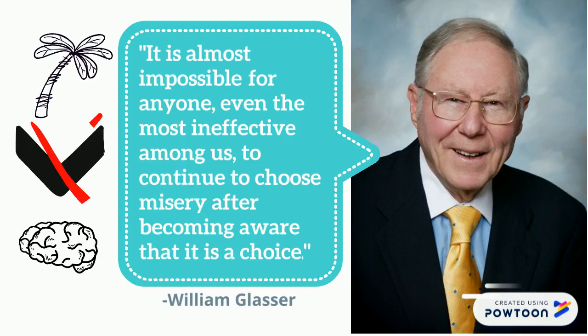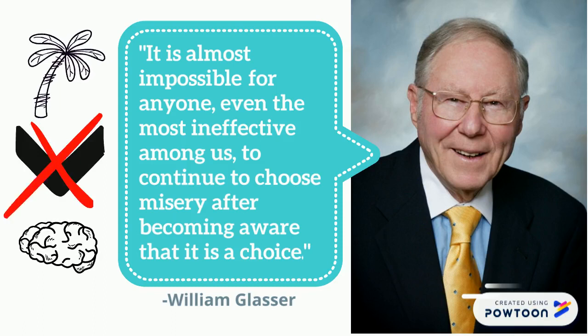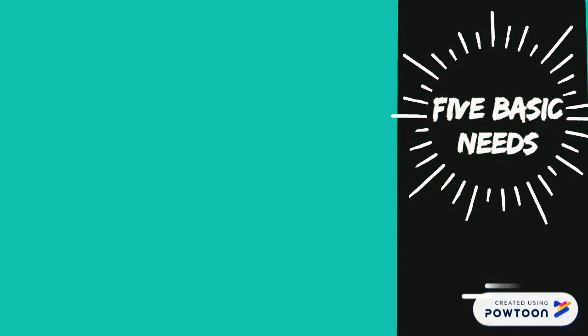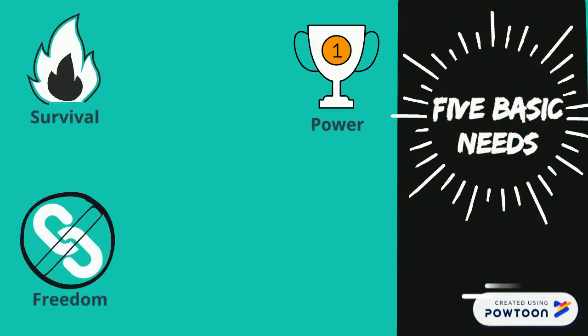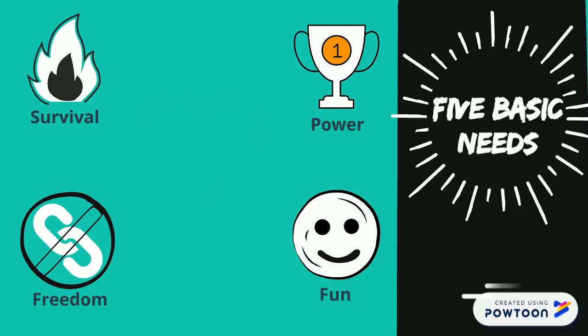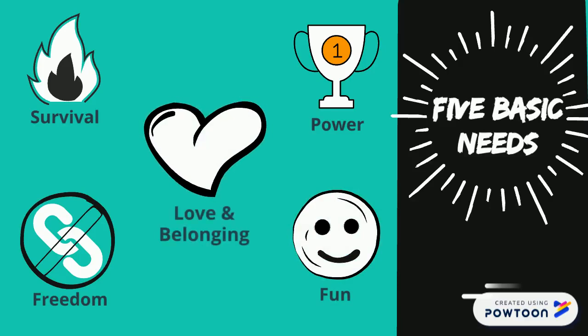Human beings choose their own behaviors. According to this theory, five basic needs motivate human behavior: survival and self-preservation, power, competence and achievement, freedom and independence, fun and enjoyment, and love and belonging.